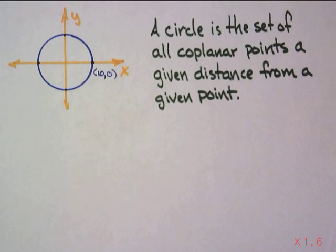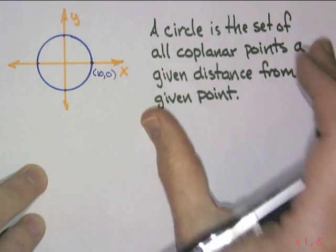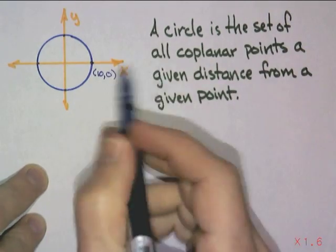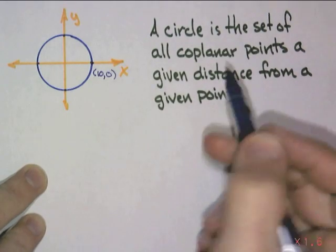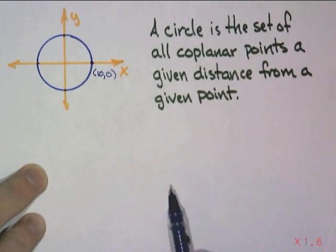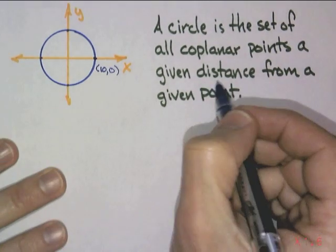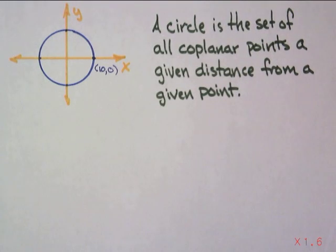All right. Now, let's get into the fun stuff of today's lesson. We're going to talk about how the distance formula helps us with an equation of a circle. And I have written down the definition of a circle. A circle is the set of all coplanar points of a given distance from a given point. So, look at that distance. A given distance from a given point. And we just did the distance formula. Hey, so maybe this is going to work.